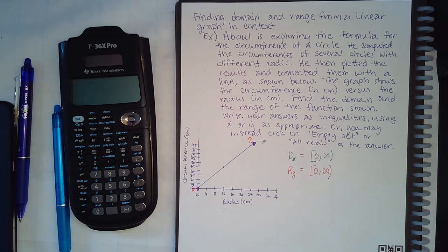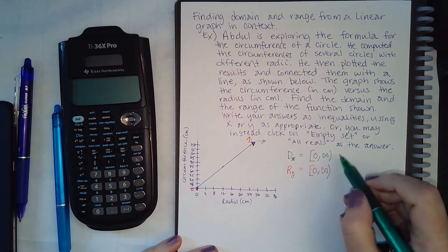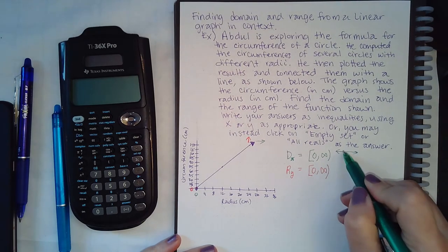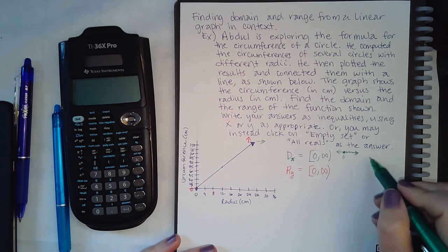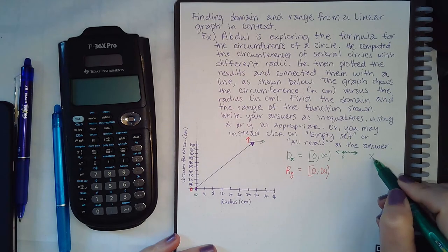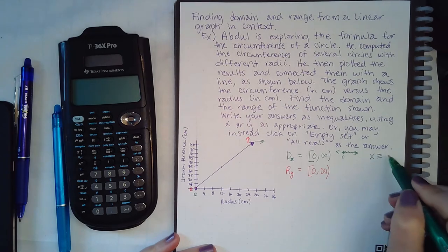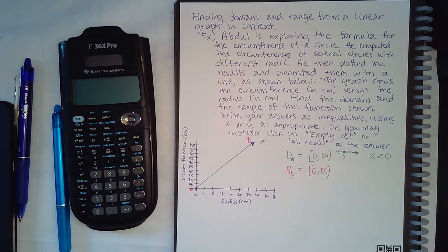But this is not what they asked me for. They asked me for this in inequalities. Okay, so what I like to do is I like to graph this first. This is zero with a solid dot and everything to positive infinity, and if I write that as an inequality it means x has to be greater than or equal to zero.